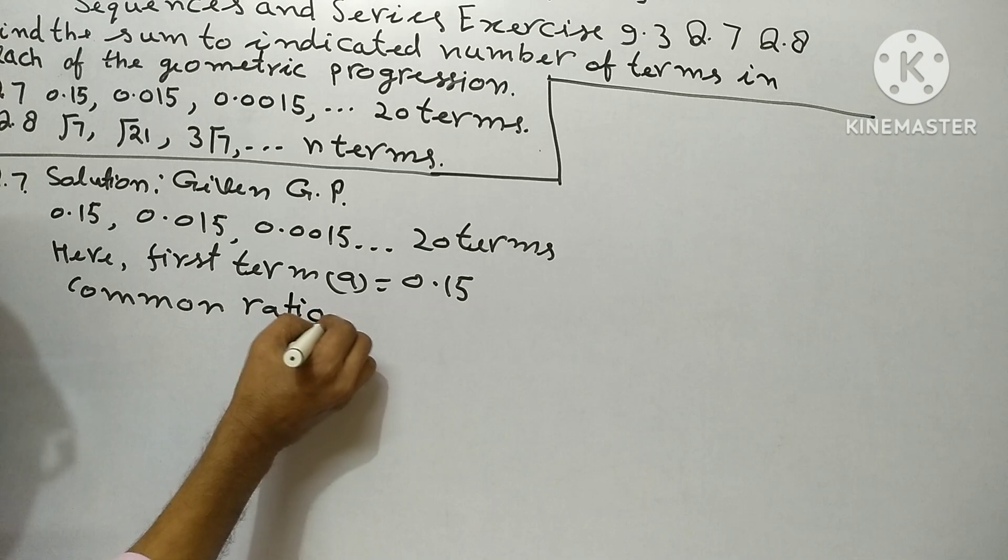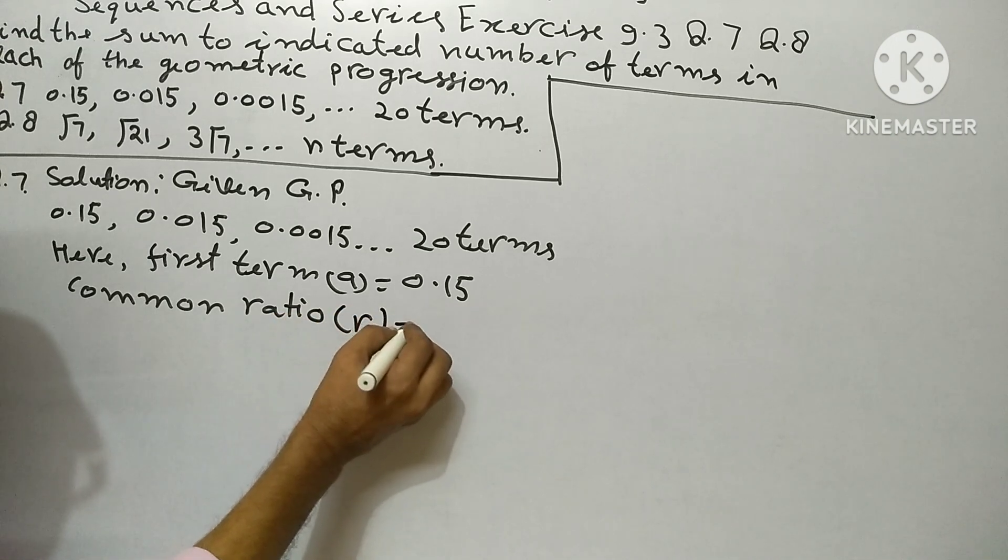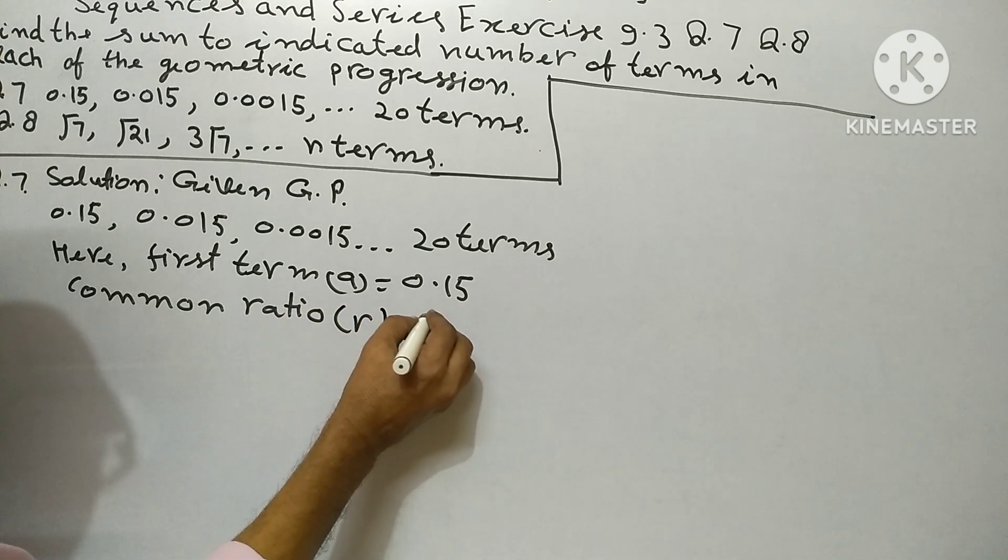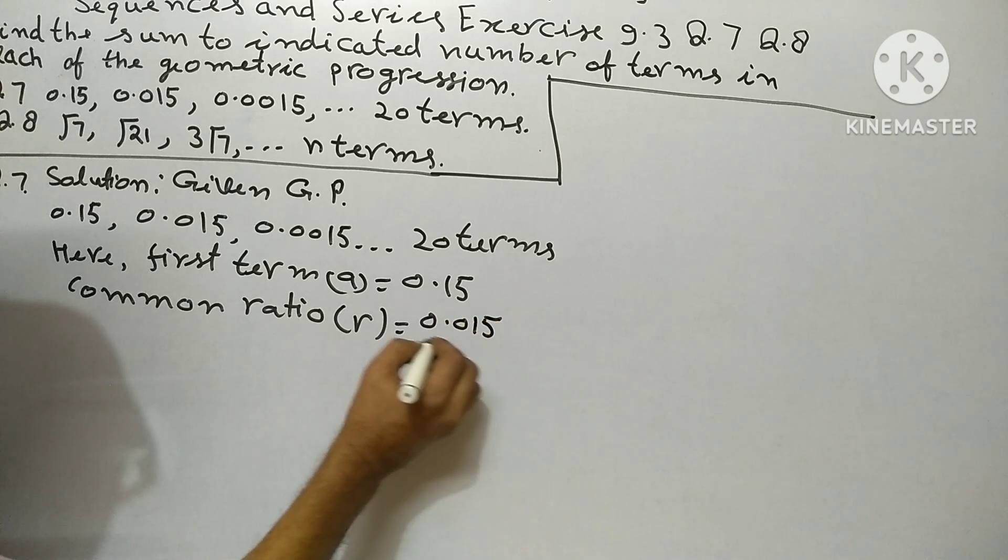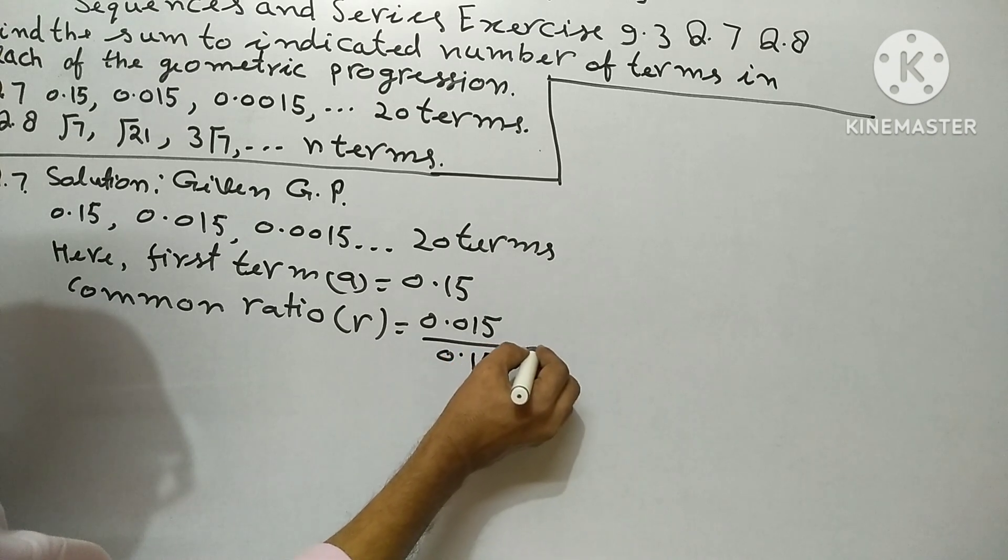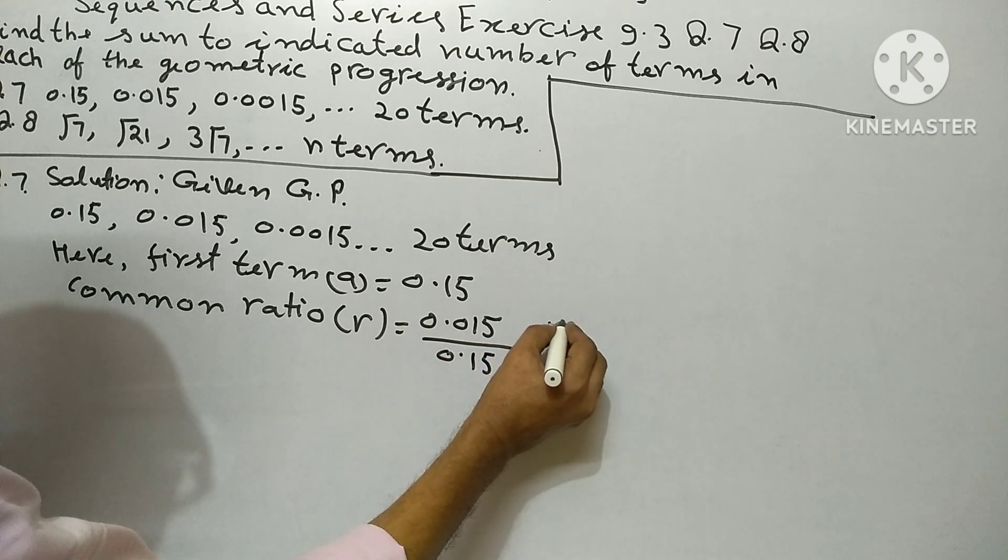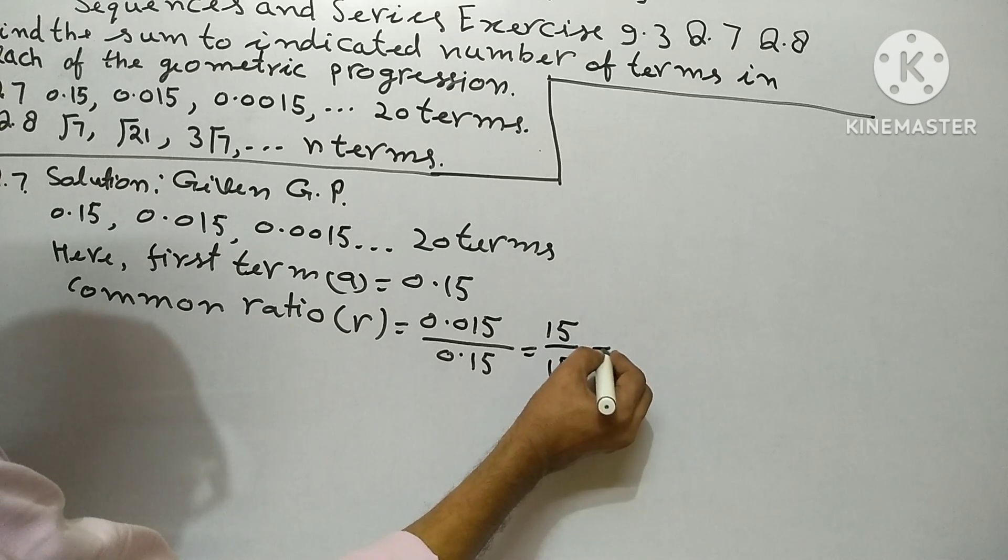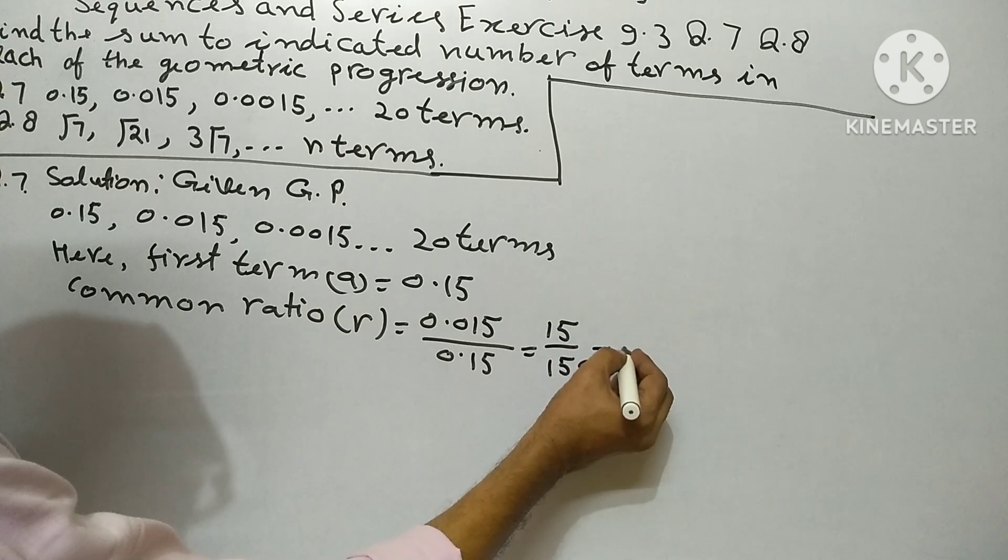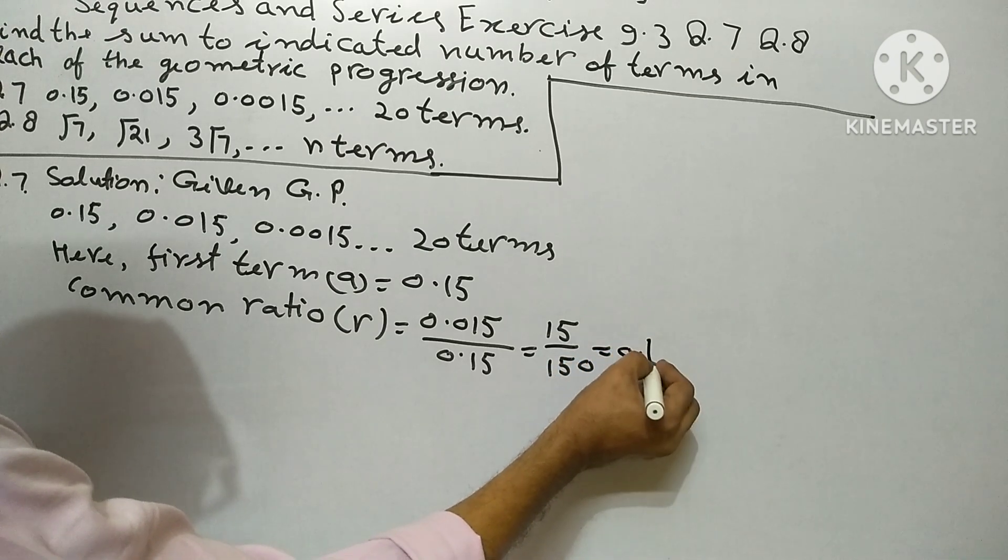Common ratio R equals 0.015 upon 0.15, equals 15 upon 150, equals 0.1.